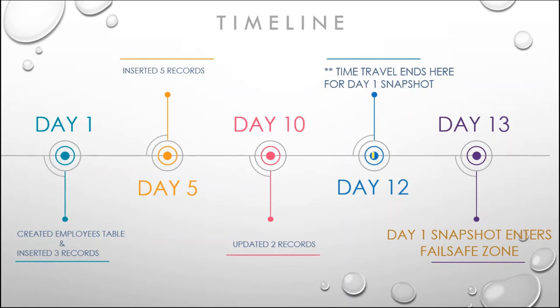Cost is an important aspect while working on Snowflake. It is important to understand how pricing is done for the failsafe zone. Any objects in the failsafe zone have associated costs. For example, on day one we created an employees table and inserted three records. It may be possible that those records were inserted at 11 AM, then at 2 PM we inserted five more records, at 8 PM we inserted 10 records, and at 11 PM we updated some records.